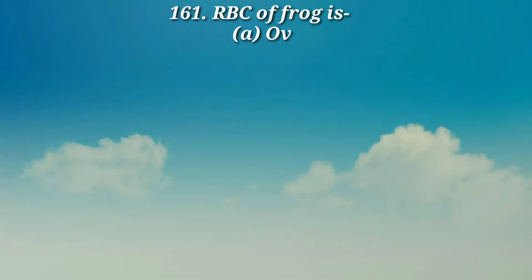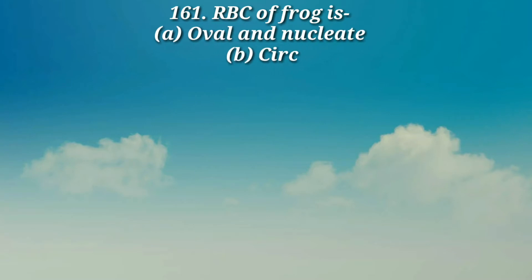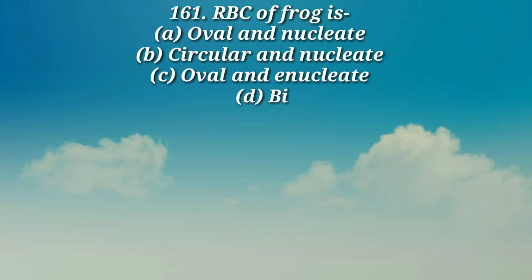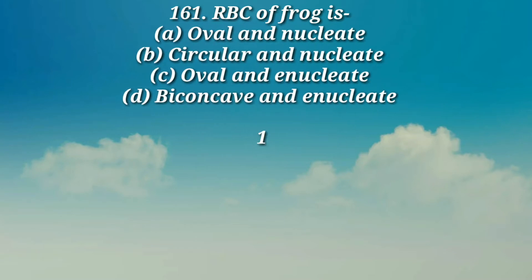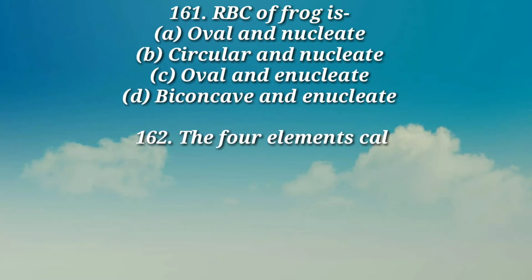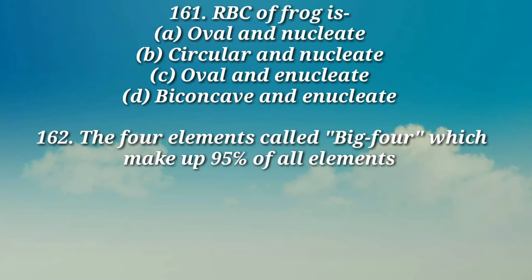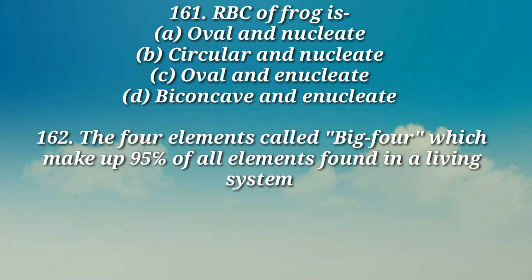Question number 161: RBC of frog are — a) oval and nucleate, b) circular and nucleate, c) oval and enucleate, d) biconcave and enucleate.